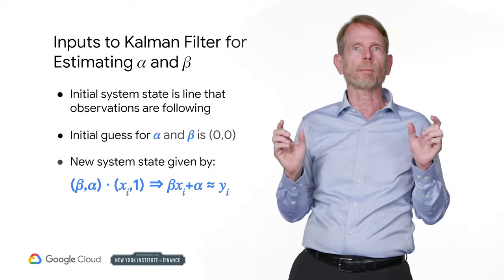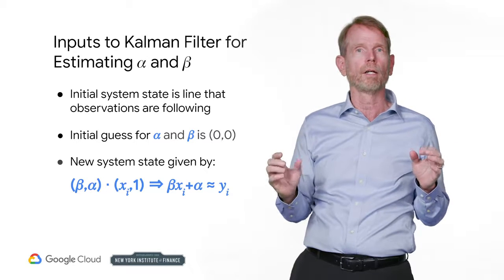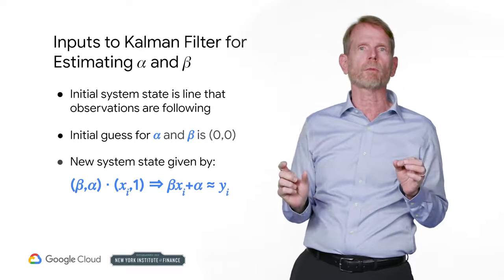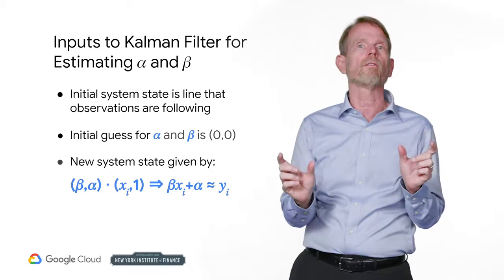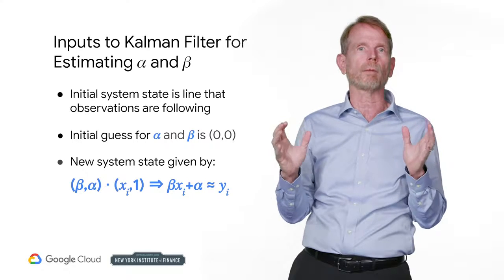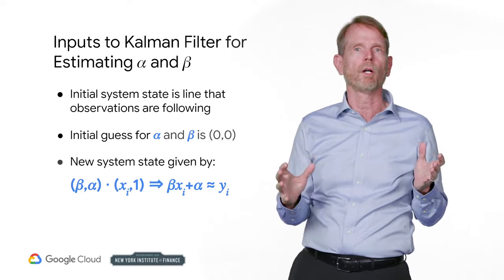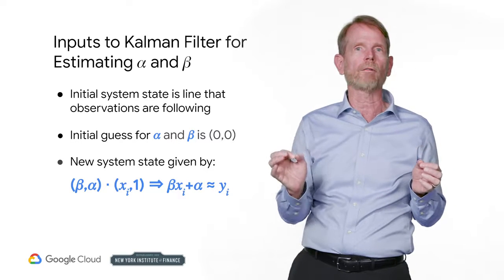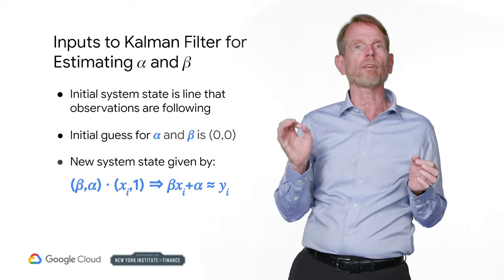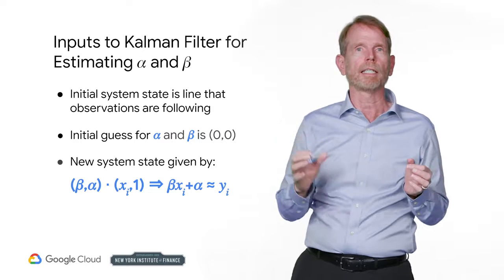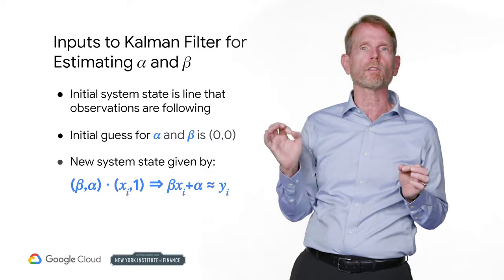As in the example of the rolling mean, we assume that our parameters follow a random walk, which means the transition matrix is the identity with a small error term. Transitions covariance is a small number times the identity. To get from the state of our system to an observation, we dot the state beta alpha with x sub i to get beta x sub i plus alpha equals y sub i. So our observation matrix is just a column of ones glued to x.